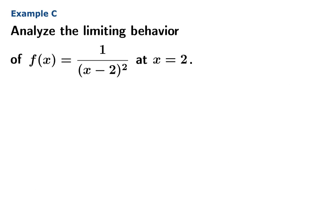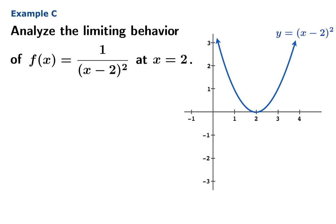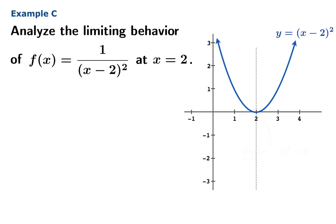Finally, let's analyze the limiting behavior of 1 over (x minus 2) squared at x equals 2. The graph of y equals (x minus 2) squared is the standard parabola y equals x squared shifted right two units. The limiting value as x approaches 2 is 0, so we expect the limiting value of the reciprocal to be infinite. Since the function values are positive as we approach from either side, the limiting value of 1 over (x minus 2) squared as x approaches 2 is positive infinity.